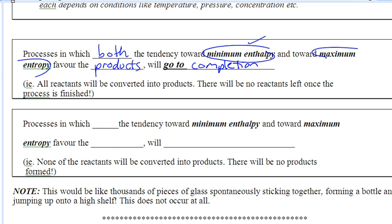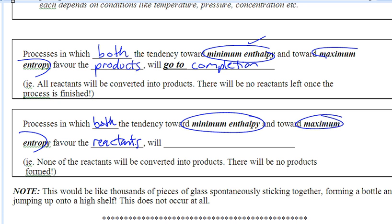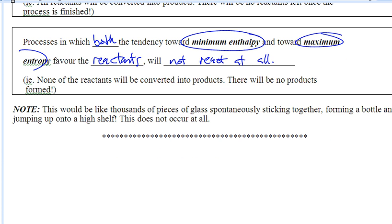The last scenario is the opposite: processes in which both the tendency toward minimum heat and maximum entropy favor the reactants — this reaction will not react at all. If the reactants have the minimum energy and the most randomness, they're not even going to react whatsoever. None of the reactants will be converted into products. To put this in context, it's basically like a thousand pieces of glass spontaneously sticking together, forming a bottle, and jumping high onto the shelf. That bottle does not want to be a solid high on the shelf — it wants to be smashed to pieces on the floor, with the least energy possible and be most random.